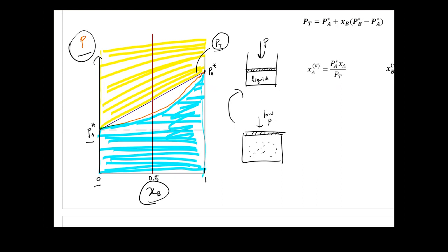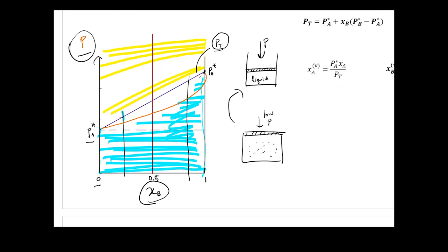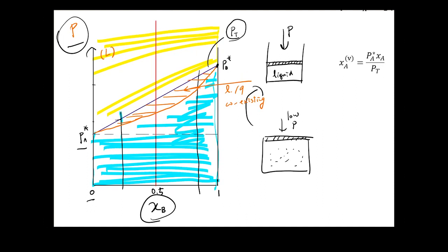The pressure needed to make things fully liquid or fully gas depends on the chemical composition. For a given composition, the corresponding pressure can be very different. The area between the two curves is the liquid-gas coexisting region. Above the upper curve is liquid; below the lower curve is gas; in between, liquid and gas coexist.